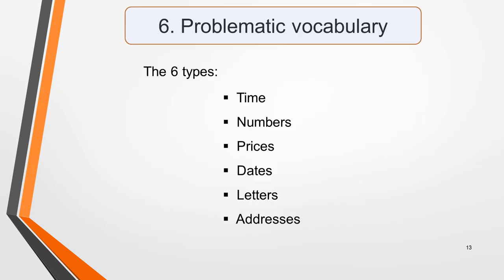There are six types of vocabulary that can cause particular problems for students in the listening test, and some of them will definitely be present in summary completion questions. The six types are time, numbers, prices, dates, letters and addresses. You must be able to recognize them in speech and to write them correctly in your answers. I've written a whole lesson on this topic, including eight listening exercises to help you recognize and learn these types of vocabulary. I've put a link to it in the notes below this video.